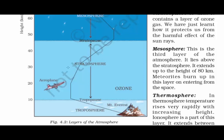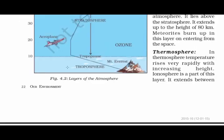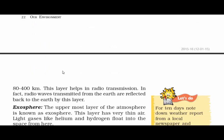The third layer is the mesosphere, with a height of 80 km from the ground. Meteorites burn up in this layer when entering from space. Then comes the thermosphere — it is very hot in this layer and temperature increases as height increases. An ionosphere exists in this layer, and its height ranges from 80 to 400 km from the ground. This layer is also very helpful in radio transmission — radio waves transmitted from Earth are reflected back to Earth by this layer.